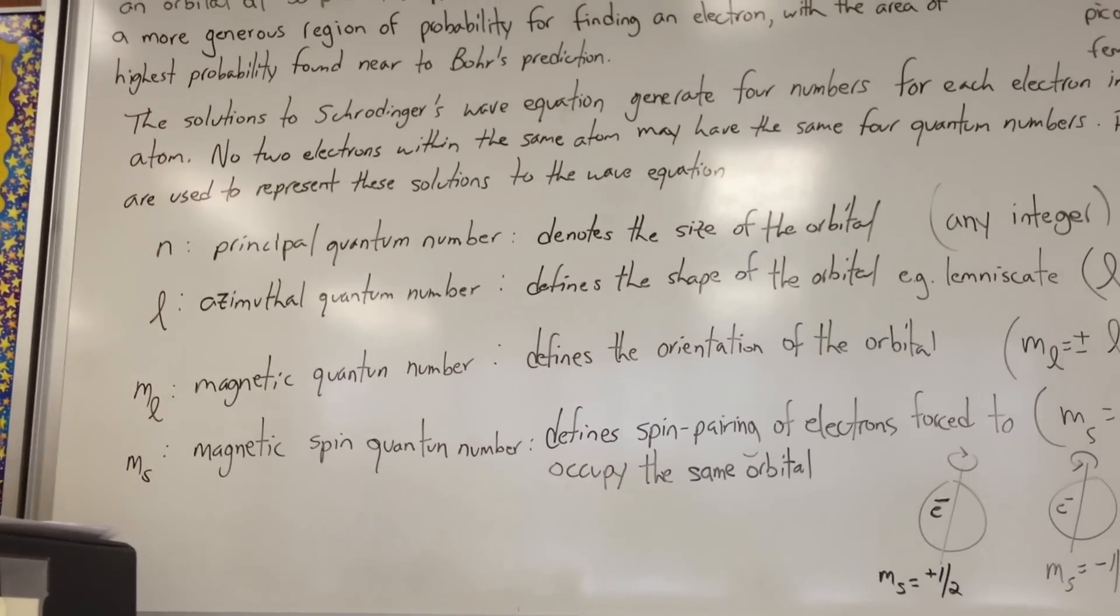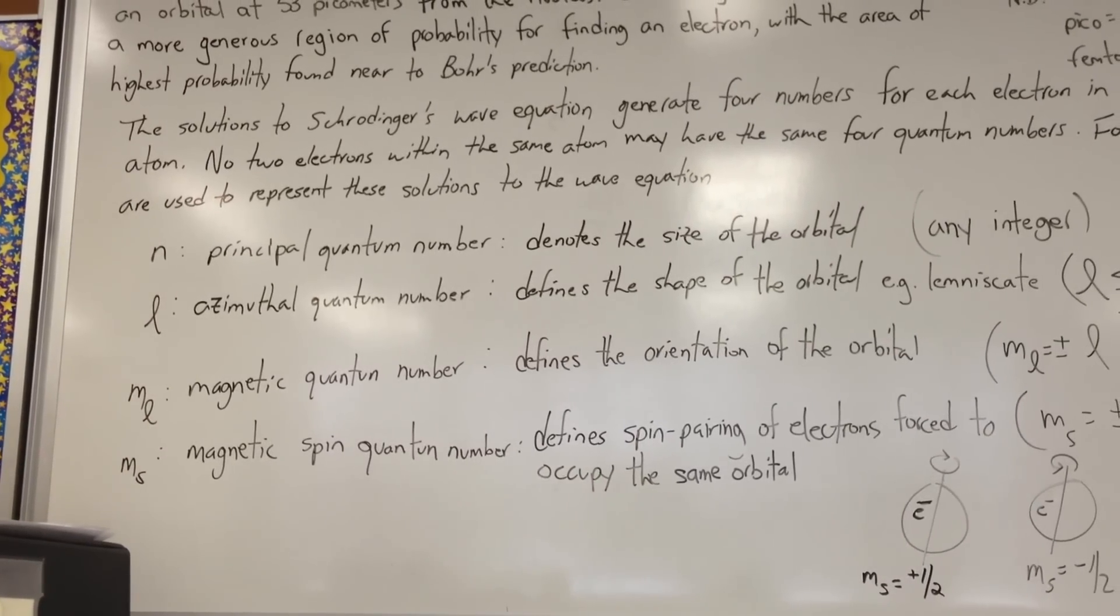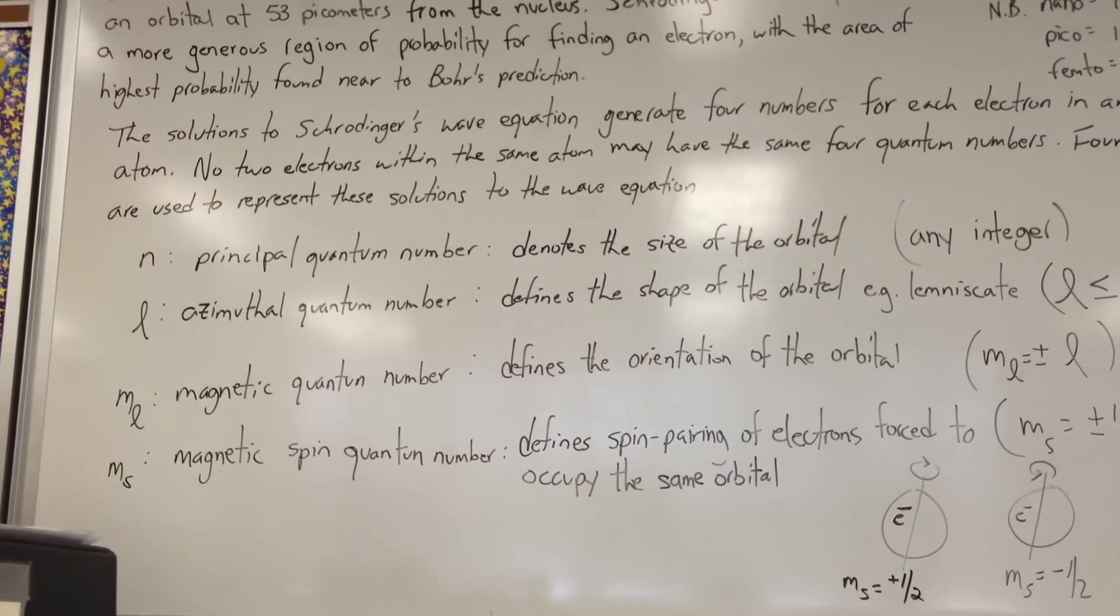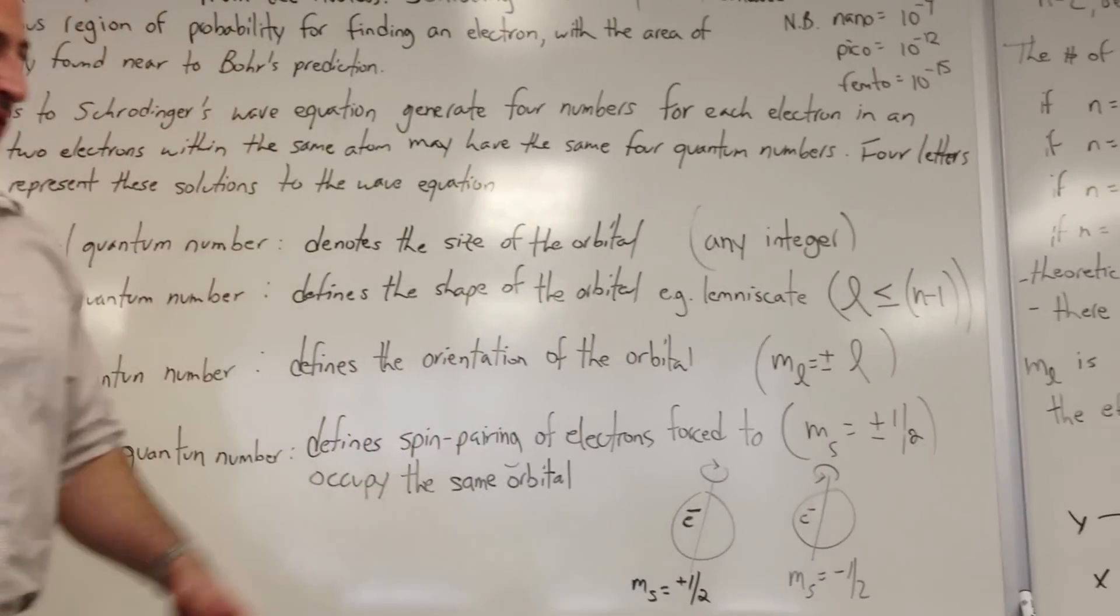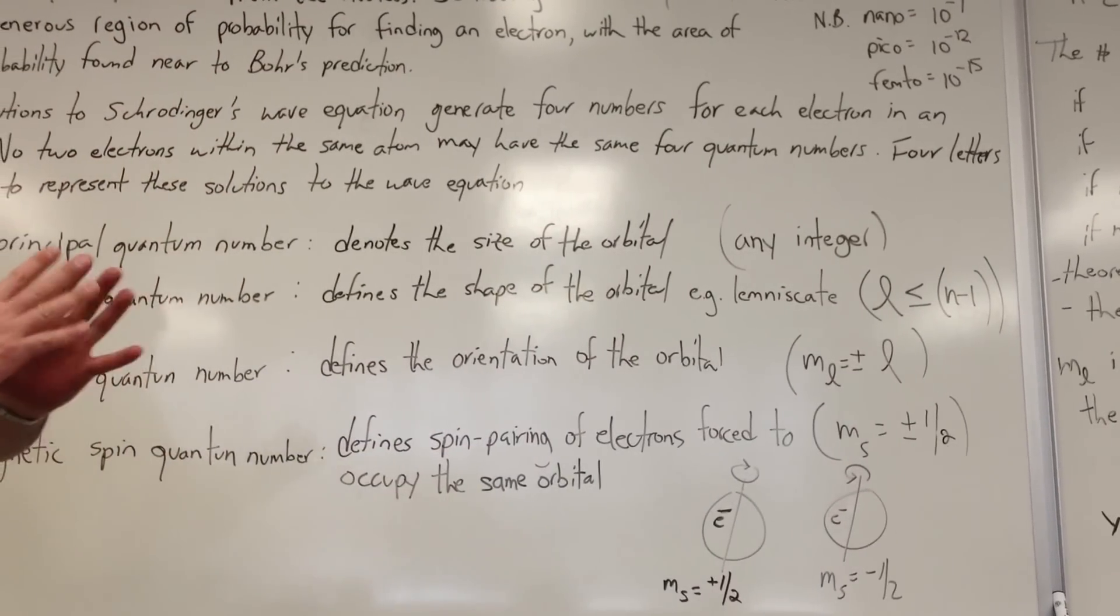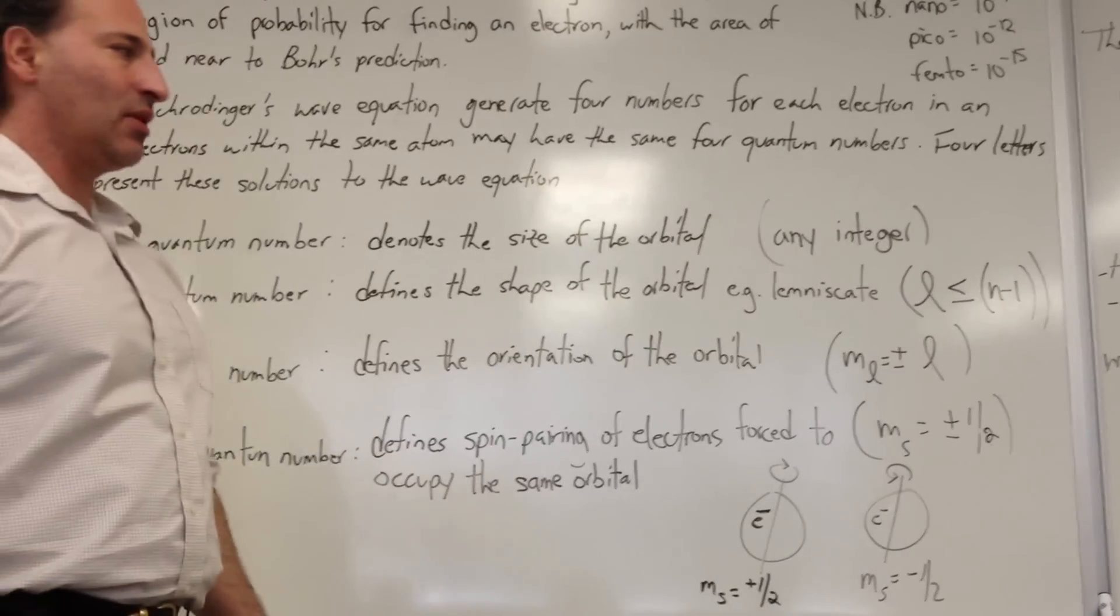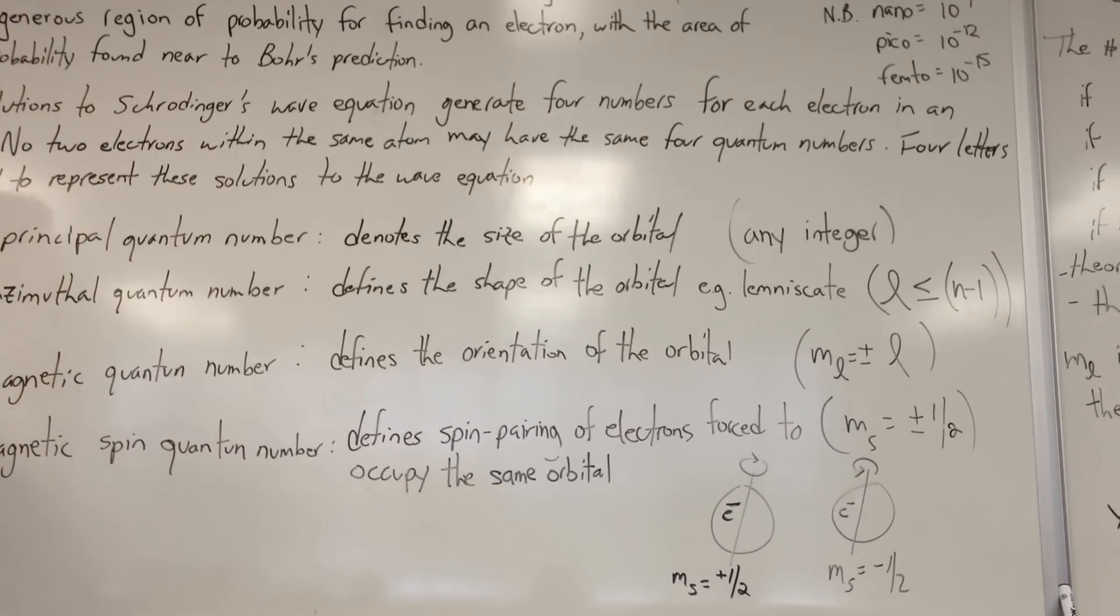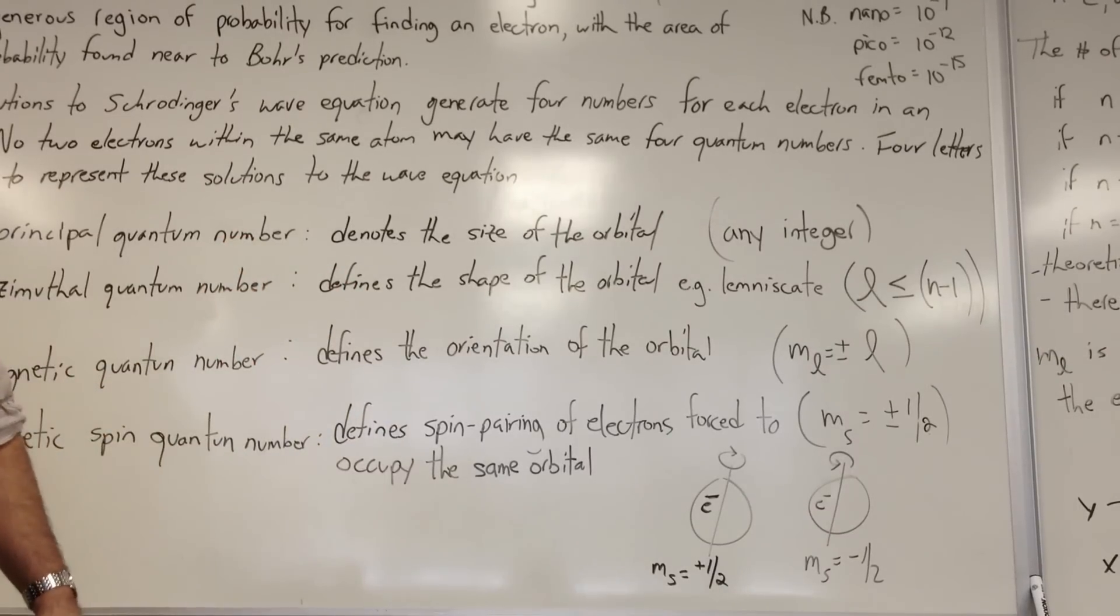The magnetic quantum number, M sub L, defines the orientation of the orbital. They found early on when doing spectroscopic analysis of elements that were excited, that when they exposed the elements to a magnetic field while it was being excited, that it split the spectral lines. And the splitting of the spectral lines had to have an explanation.